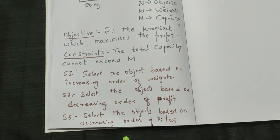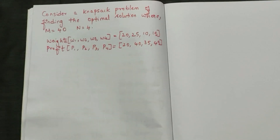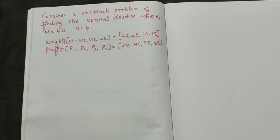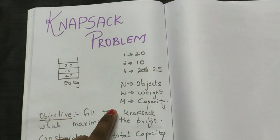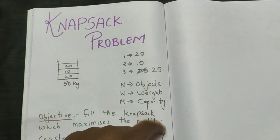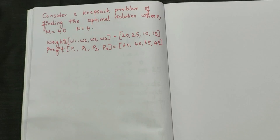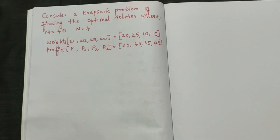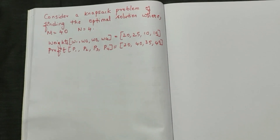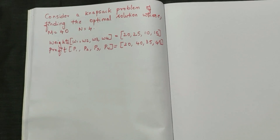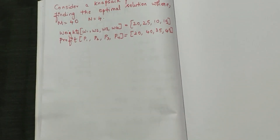The question given to us: consider a knapsack problem where m equals 40 and n equals 4. m is the capacity and n is the number of objects. We are given weights w1, w2, w3, w4 and their corresponding profits. We now start solving the problem using all three strategies.